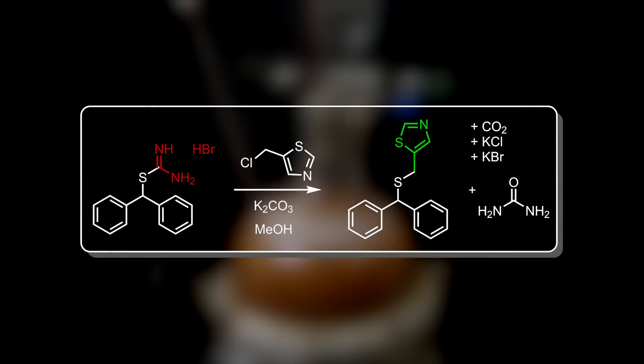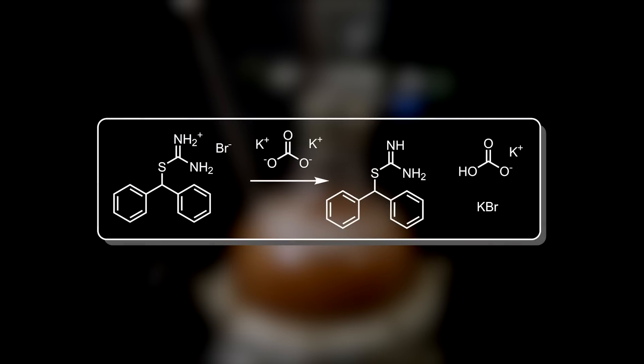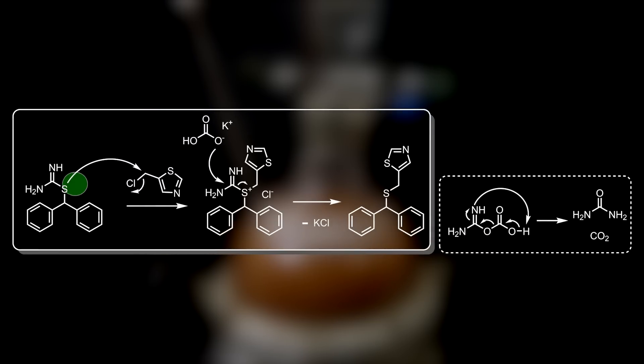In this reaction, the amidinium is replaced by this methyl thiazol group by reacting with the 5-chloromethyl thiazol in the presence of a suitable base. First, all of the amidinium is neutralized by the potassium carbonate, forming the corresponding amidine, potassium bicarbonate, and potassium bromide. Then the sulfur can attack the electron-deficient carbon adjacent to the chlorine and then kick off the chlorine, which is a good leaving group, resulting in this intermediate.